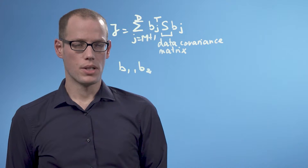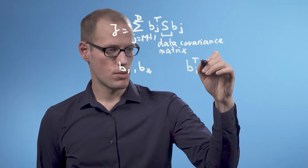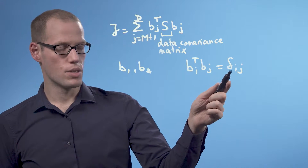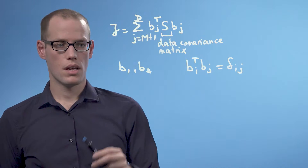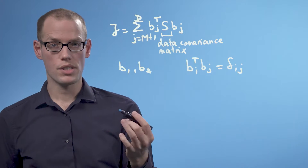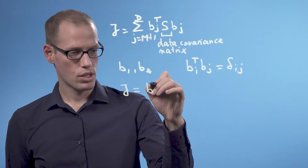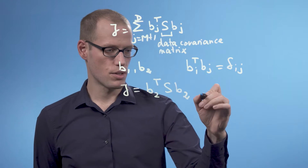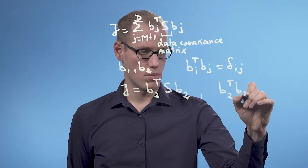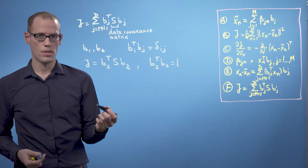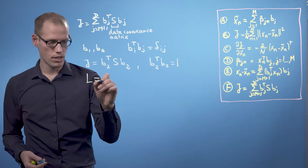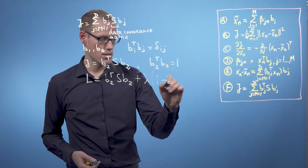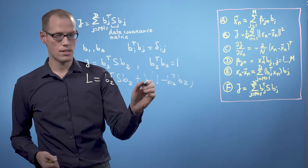We also have the constraint that b1 and b2 are orthonormal, which means that bi transpose times bj equals delta ij — that is, this dot product is 1 if i equals j and 0 otherwise. In our example with two vectors, our loss function is j equals b2 transpose times s times b2, with the constraint that b2 transpose times b2 equals 1. To solve this optimization problem, we write down the Lagrangian.